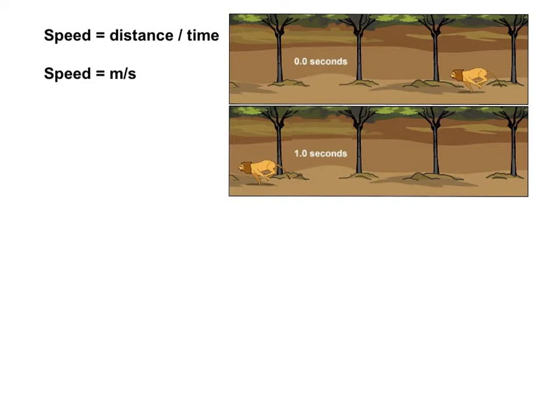We're going to use those trees as reference points. A reference point is simply an object that we use to compare something to to see if it's moving. Objects that move change their position when compared to those reference points. If you remember from the gizmo, the trees are five meters apart from each other. So every time the lion goes from here to the same place there, he's going to travel five meters.